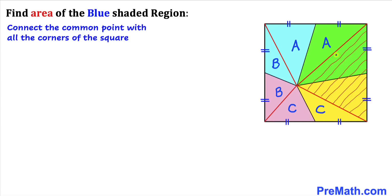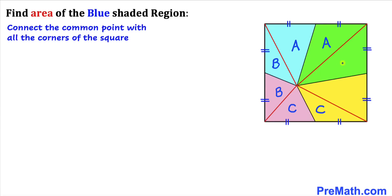Now let's focus on these next two triangles. We know that their base is the same and their height is the same as well. Therefore we conclude that the area for both of these triangles is going to be the same. If the area for this yellow triangle is D, then the area for this green triangle is going to be D as well.